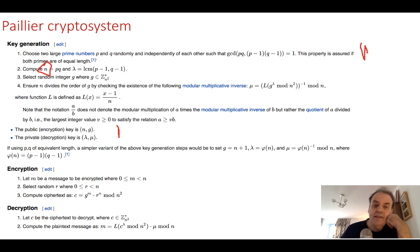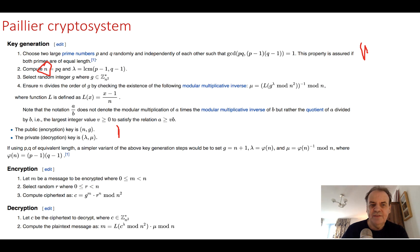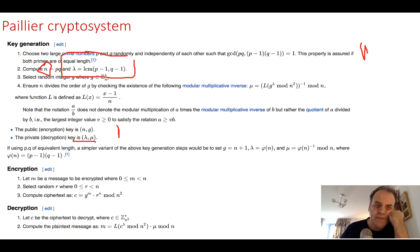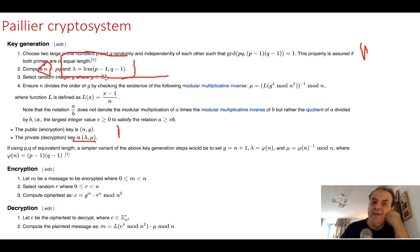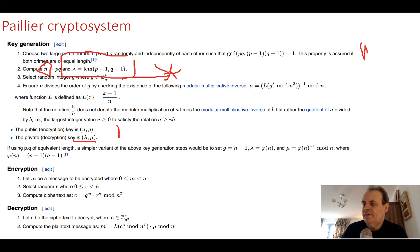The public key is n and g. n is one of our factors and it should be difficult to factorize back into p and q — if that can be done, the cipher is cracked. We create a private decryption key of lambda and mu. Lambda is calculated as the lowest common multiplier between p minus 1 and q minus 1. We then select a g value within the multiplicative group of integers modulo n squared.